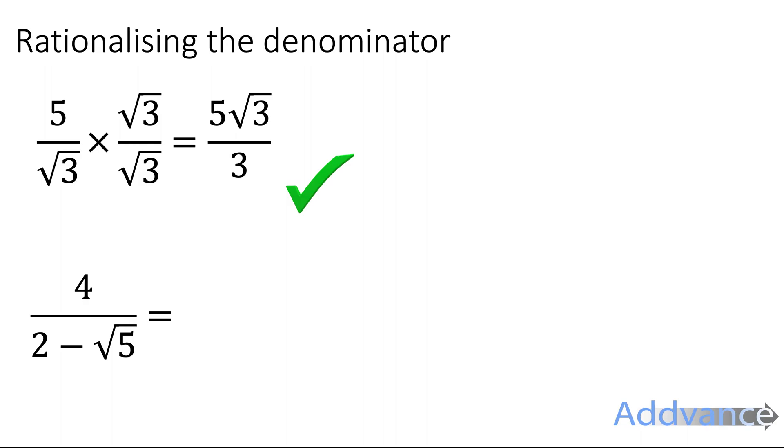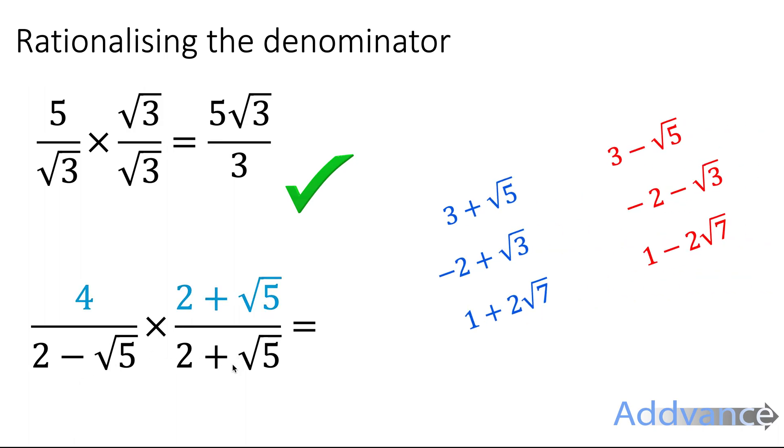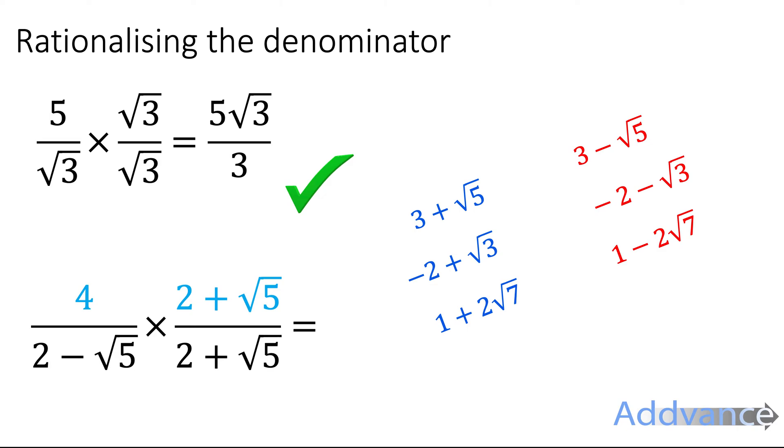That's the final answer. Now for the bottom one, 2 minus root 5. You have to multiply the top and the bottom by the opposite of the bottom. The opposite of the bottom is when you change the middle symbol. If it's minus you make it plus. If it's plus you make it minus. Some examples: 3 plus root 5 becomes 3 minus root 5. Minus 2 minus root 3 becomes minus 2 plus root 3. 1 plus 2 root 7 becomes 1 minus 2 root 7. So you're changing the middle sign to make it the opposite. There's a very special reason why we do that. It's so things cancel out later.